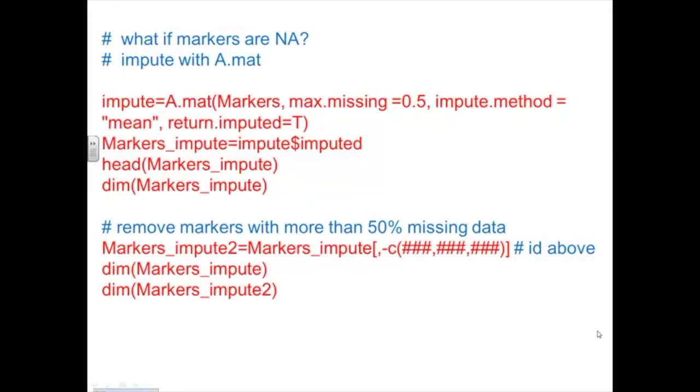Within rrBLUP, we have this AMAT function, and we were using it yesterday by default to create a kinship matrix. But AMAT also has some characteristics in it where it allows us to impute data. I prefer to impute my data before I bring it into rrBLUP, but one way I could do it would be using the AMAT function of rrBLUP.